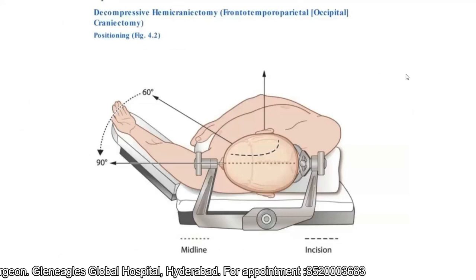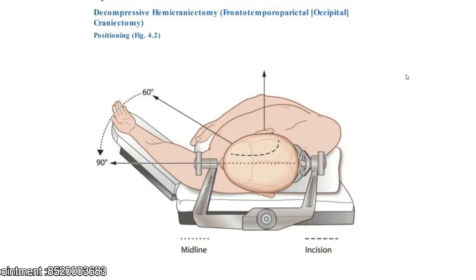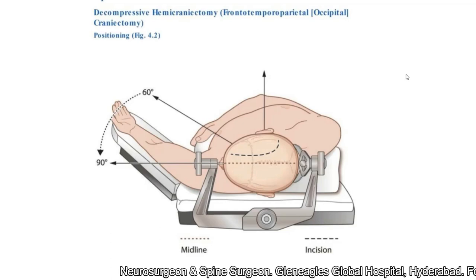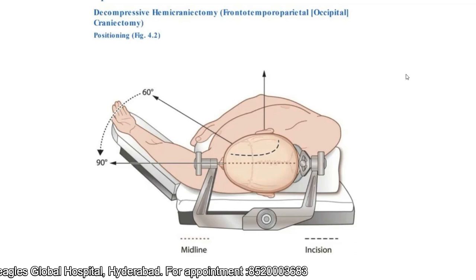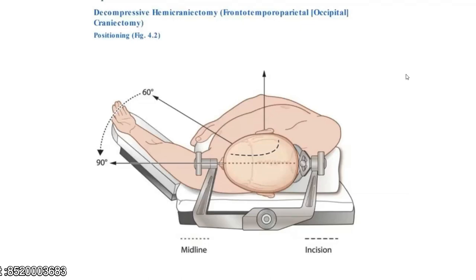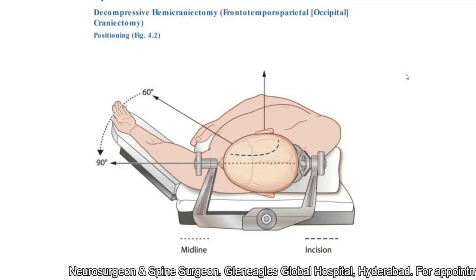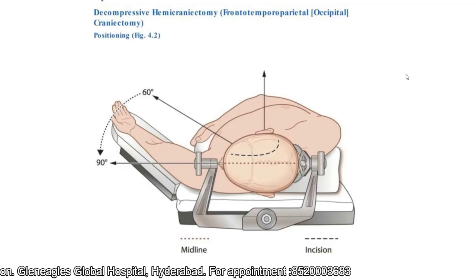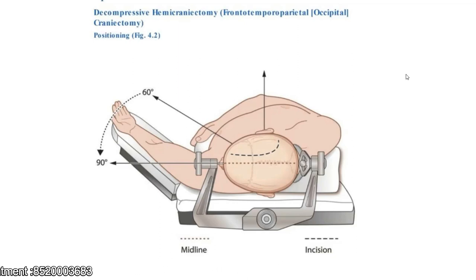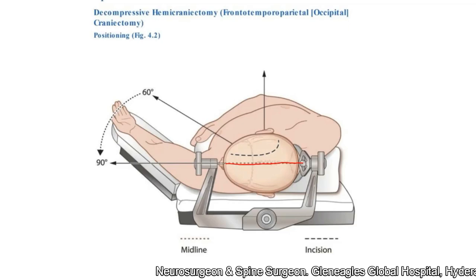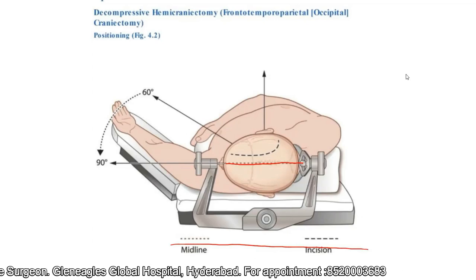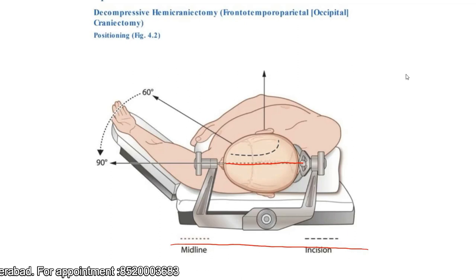Now coming to the procedure: as in any other procedure, positioning is very important. I may use either a three-pin headrest for rigid fixation, or — because this is an emergency — I personally prefer a standard headrest. Most importantly, you rotate the head to the opposite side, preferably so that the midline of the head is parallel to the table. If you cannot rotate 90 degrees, then at least 60 degrees is required.